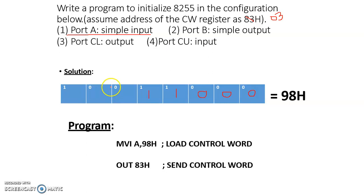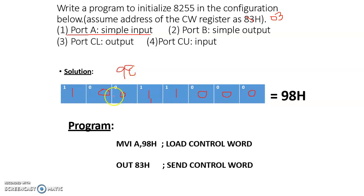Port A mode is selected as mode 0 (simple I/O), so the mode selection bits are 0,0. Bit 7 must be set to 1 to enable the control word. Combining all these, the control word value comes out to be 98H. This value must be loaded into the accumulator and then written to the control word register of the 8255.